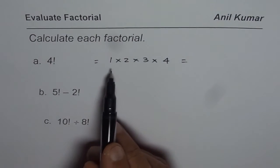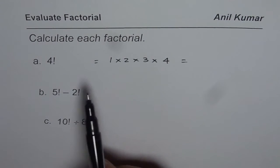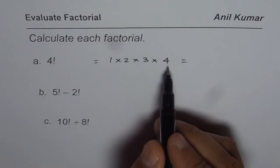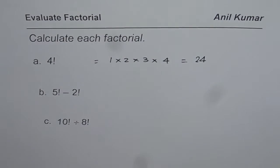So it is a short form of writing all that. You could have written this as 4 times 3 times 2 times 1 also. Both are correct. So 4 times 3 is 12, 12 times 2 is 24. So the answer is 24 for us.